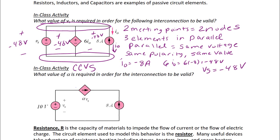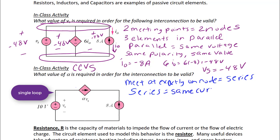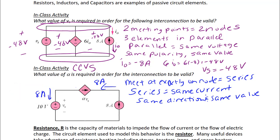In-class activity two: what value of alpha is required in order for the interconnection to be valid? Here we have a single loop where we have several elements where exactly two of them meet at a node — they're all end to end. When exactly two elements meet at a node, we say that they are in series. Elements that are in series have the same current. We have an independent voltage source, an independent current source, and a voltage controlled current source in series, all with the same current of eight amps flowing counterclockwise.